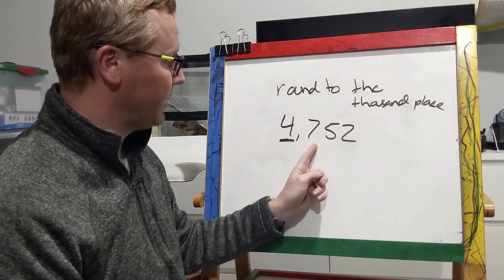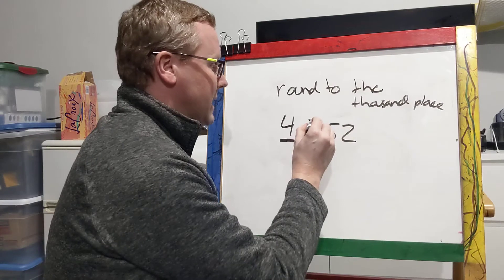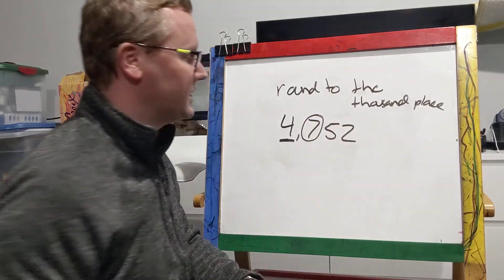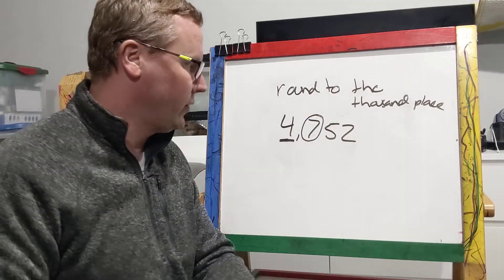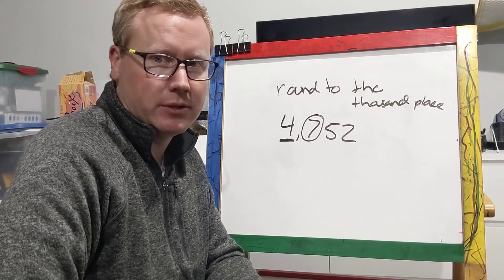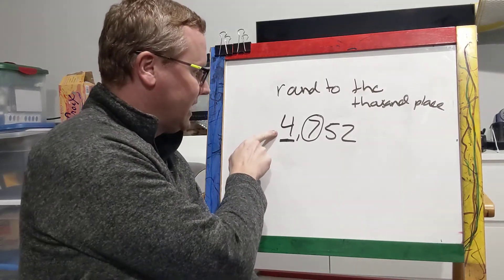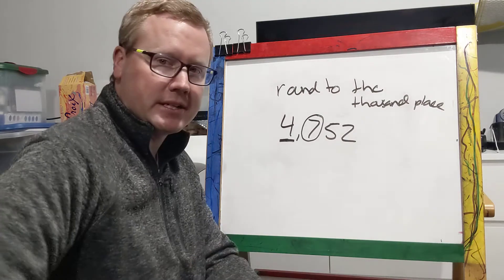Next we need to look to the right, and we're going to circle that number. Because that number is going to tell us what we need to do. Who can remember what a seven tells us to do? Is it going to tell us to keep this the same or are we going to add one to that?